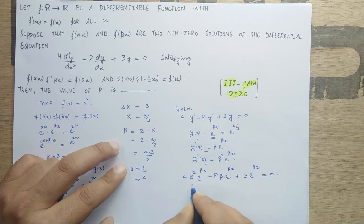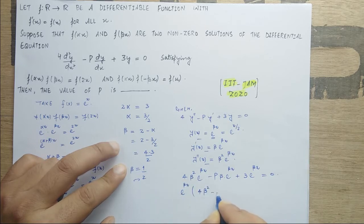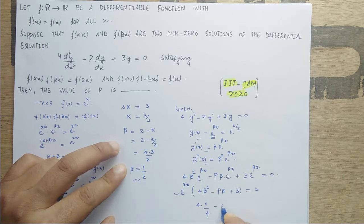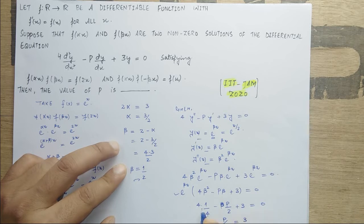Factoring out e^(βx), which is never zero, we get 4β² - pβ + 3 = 0. Substituting β = 1/2: β² = 1/4, so 4·(1/4) - p·(1/2) + 3 = 0, giving 1 - p/2 + 3 = 0. Therefore p/2 = 4, which implies p = 8. So p is 8.